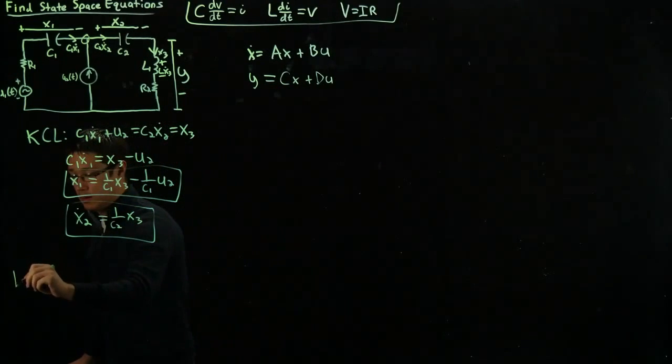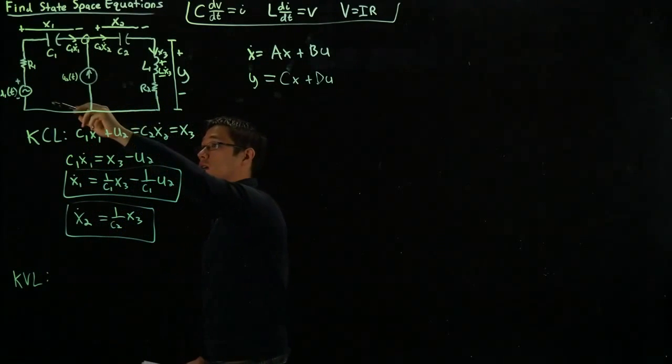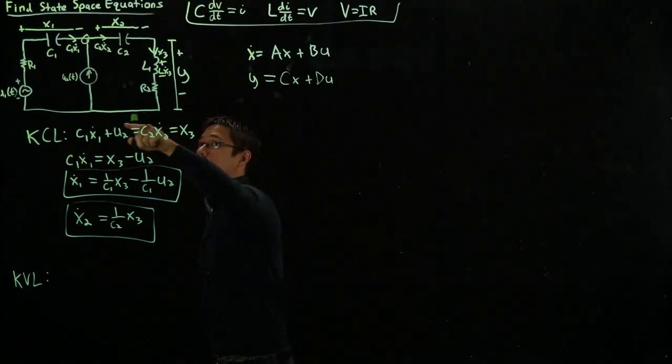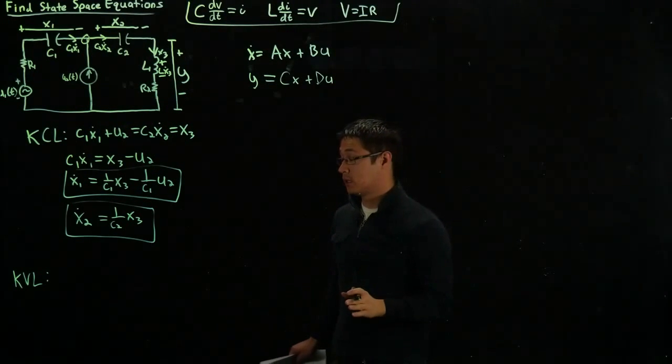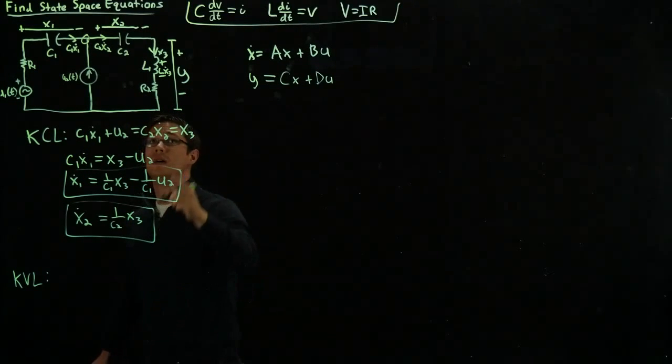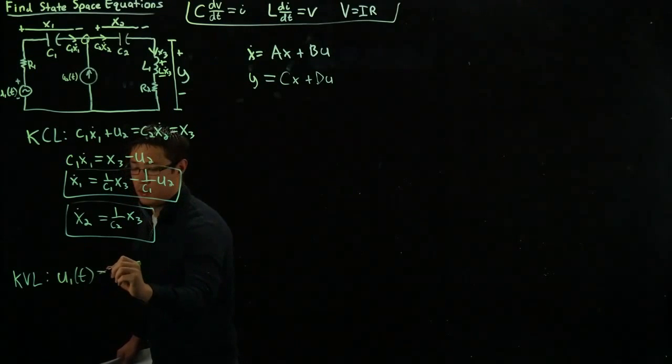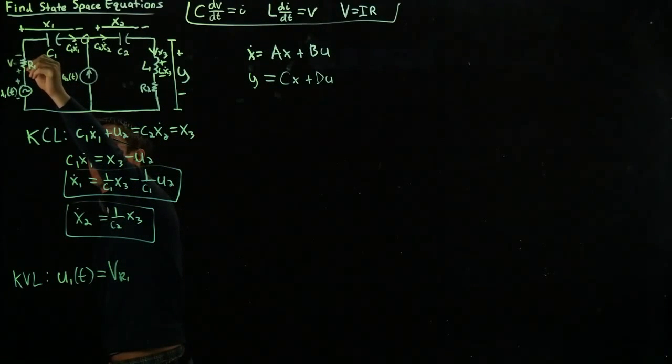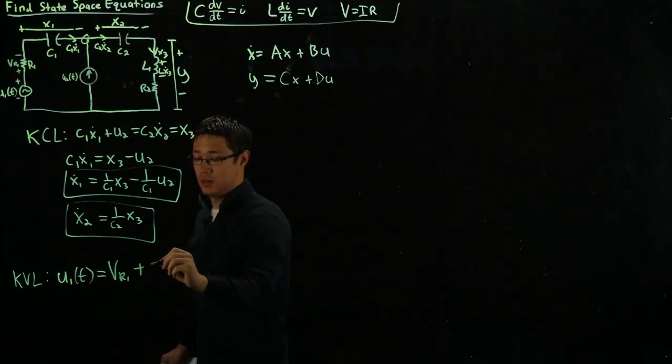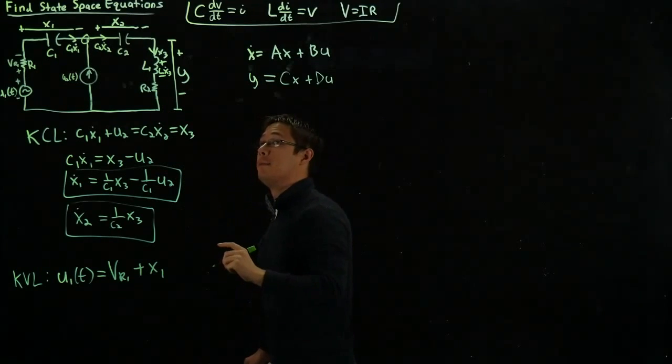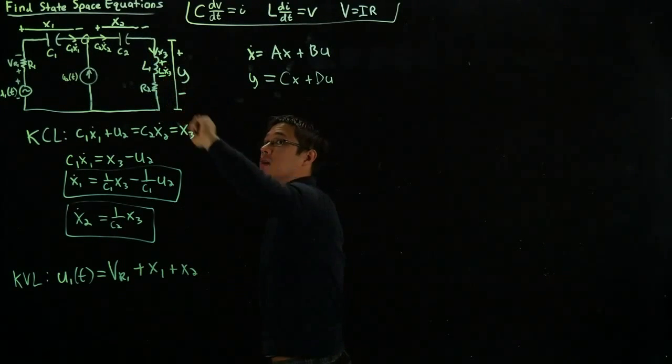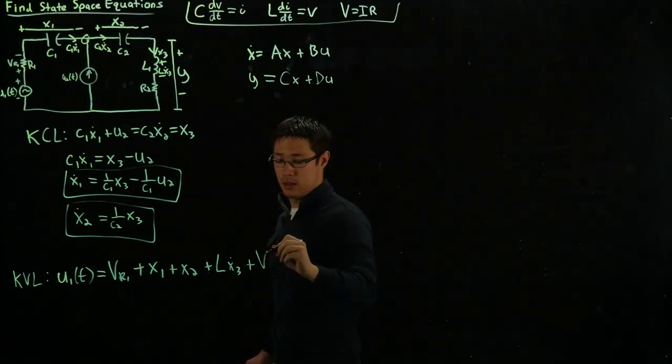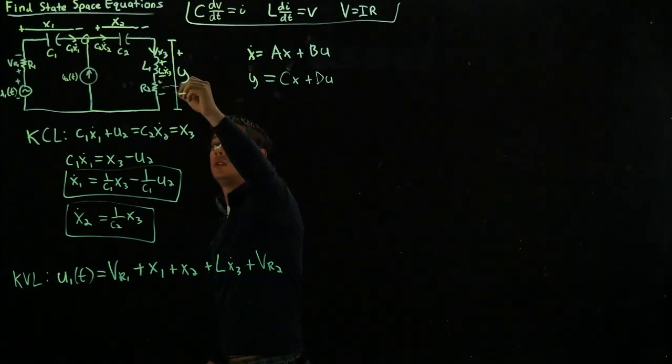Using KVL, specifically on the largest branch here, we observe that x3 dot can be written in terms of x2, x1, and U. In other words, there are no derivative terms when we do KVL except for x3 dot across the outer loop. So I'll go ahead and write that now. U1(t) equals the voltage across R1, so I'll write that here, plus x1, plus x2, plus L x3 dot, plus the voltage across R2, which I'll define as such.